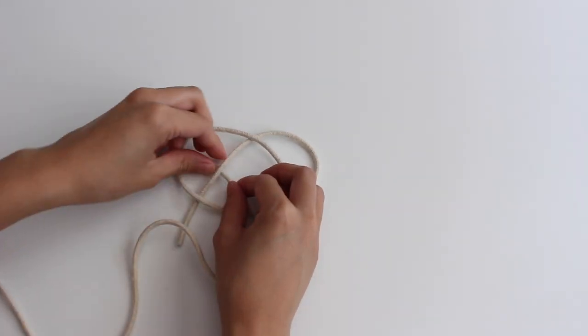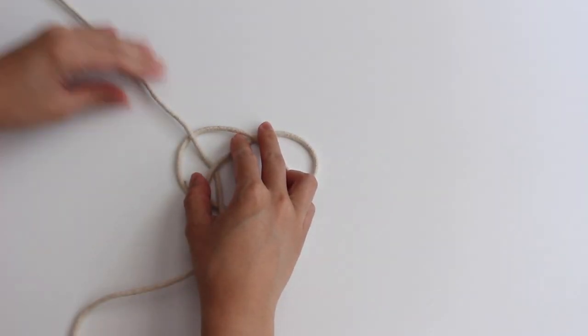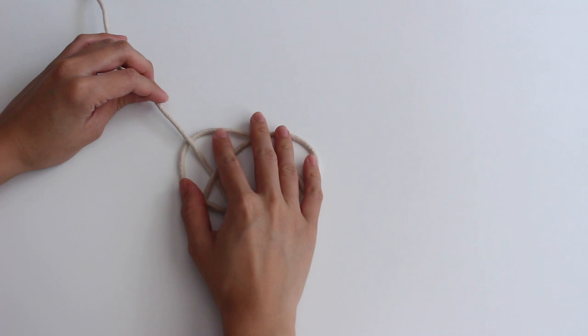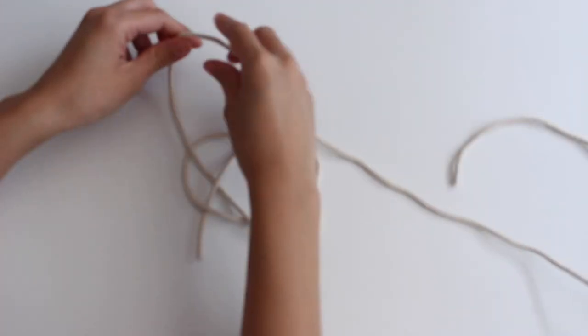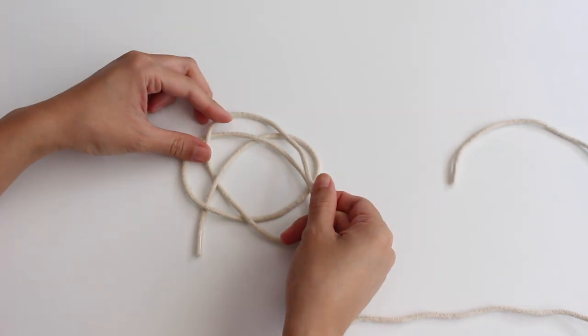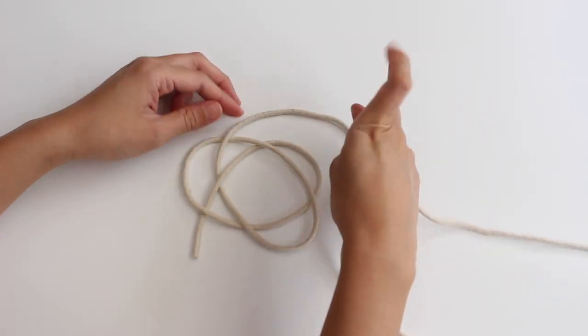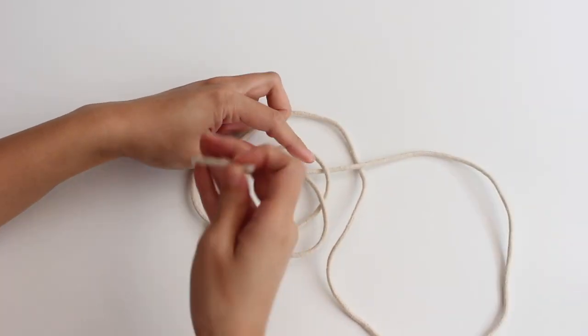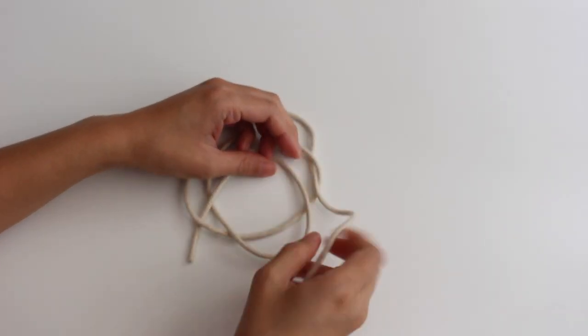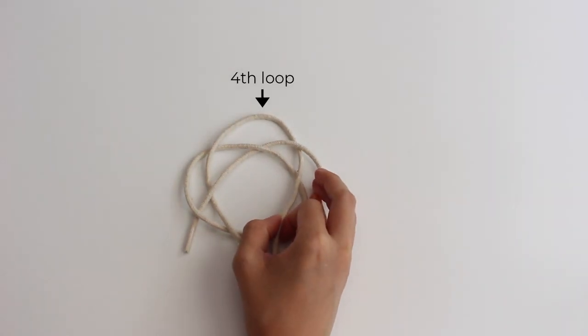Next, bring it over then under the cord. This forms a third loop. Bring it under then over the cord. This forms a fourth loop.